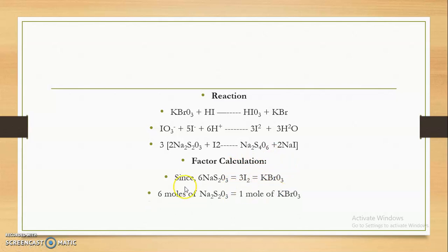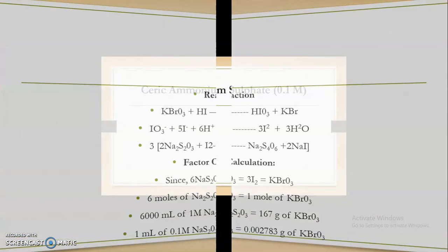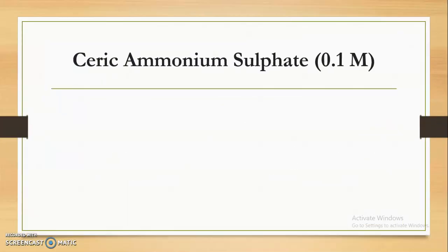For factor calculation: 3 × 2 = 6 moles of sodium thiosulphate react with 3 moles of iodine, which is equivalent to 1 mole of potassium bromate. So 6000 ml of 1 molar sodium thiosulphate is equivalent to 167 grams of potassium bromate. Therefore, 1 ml of 0.1 molar sodium thiosulphate is equivalent to 0.002783 gram of potassium bromate.